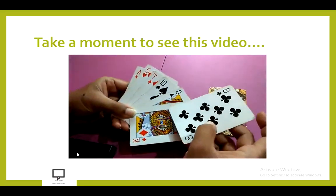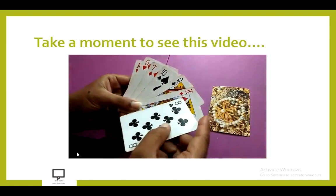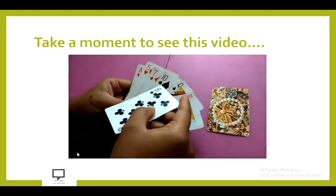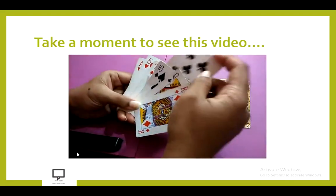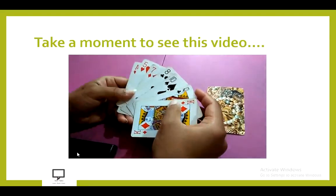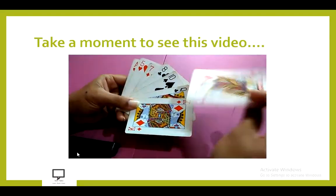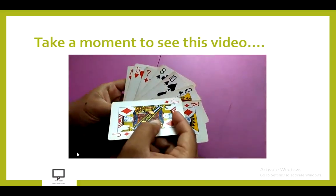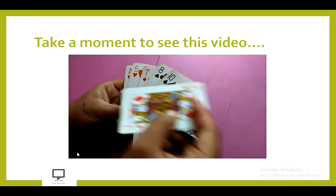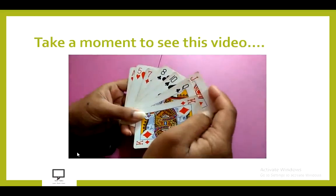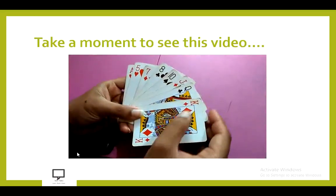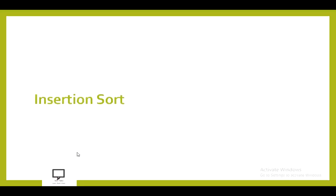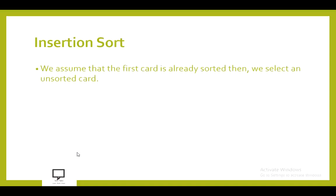Now let's take one more card which is 8. 8 is less than king, queen, and 10, but greater than 7, so we insert it in between 7 and 10. The last card is jack — jack is compared with king and queen, and is greater than 10, so we insert it after 10 and before queen. Now let's move to the next slide where I am explaining what insertion sort is.